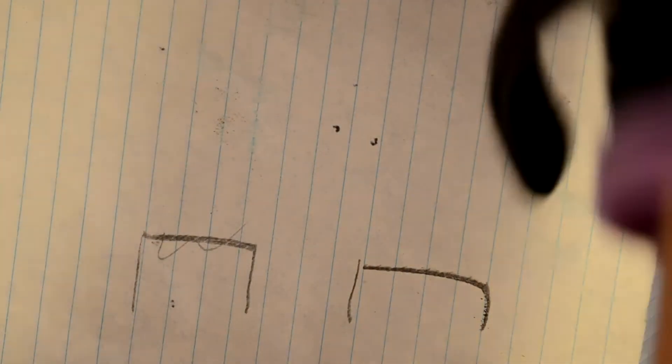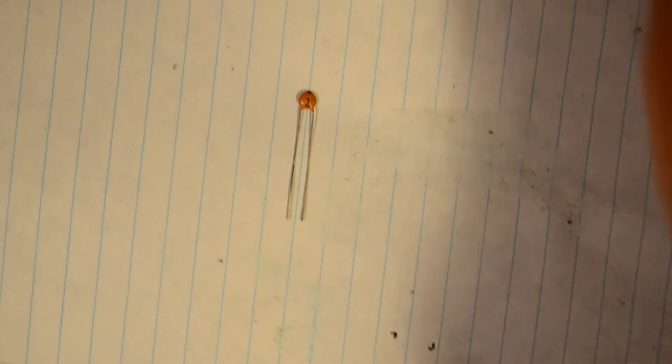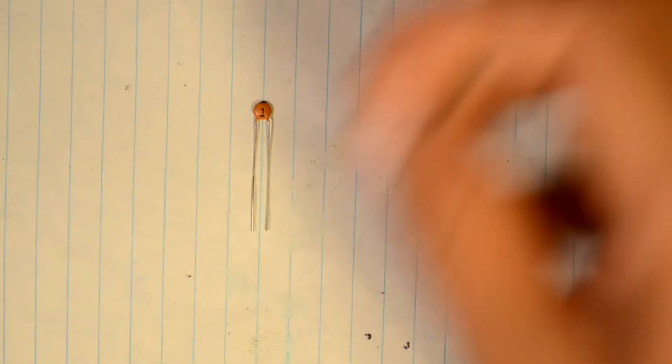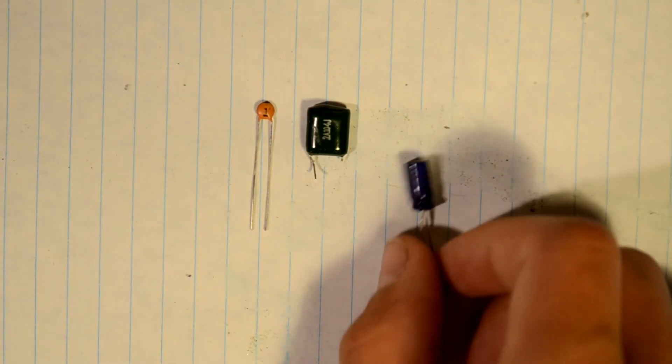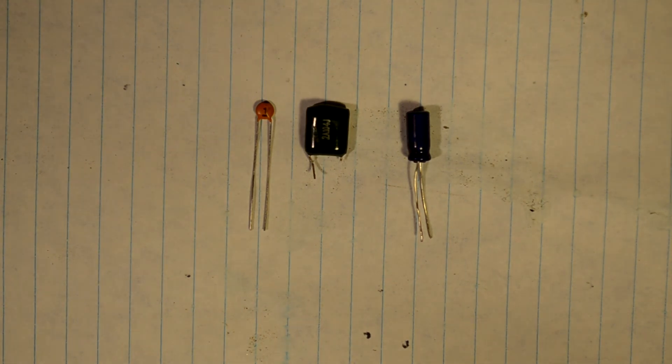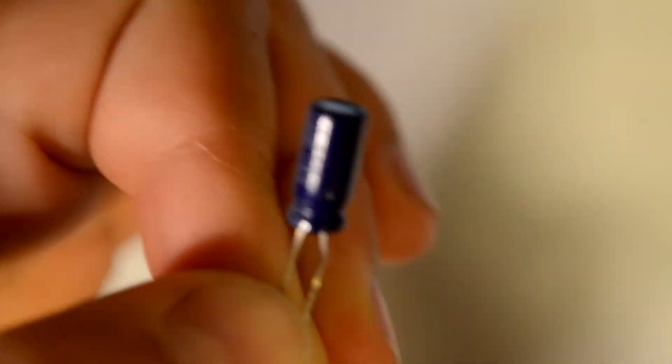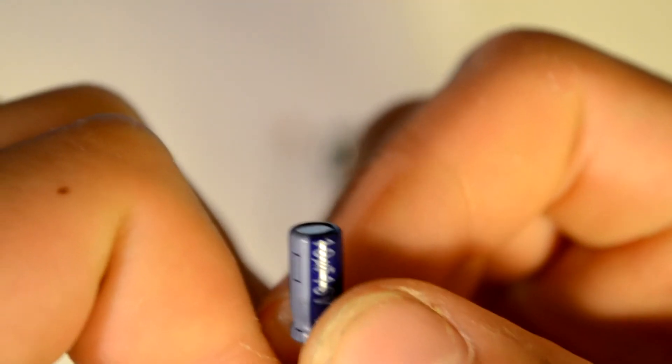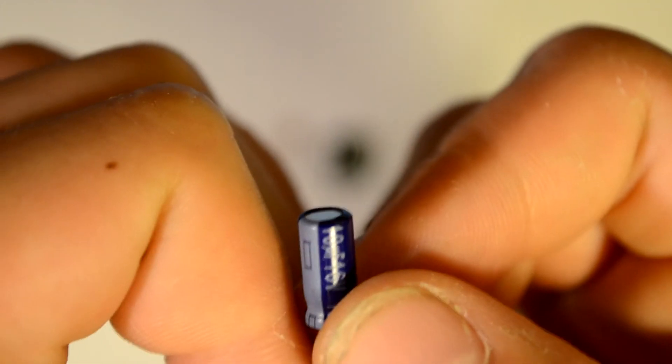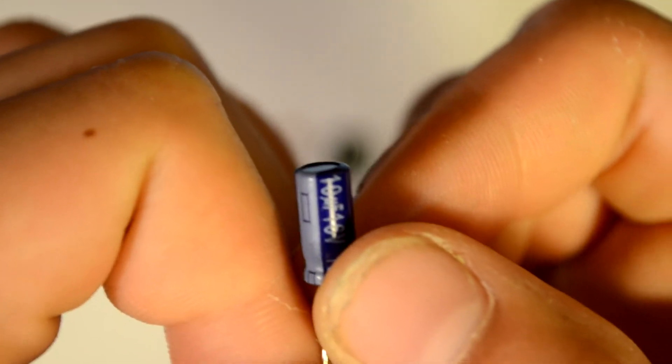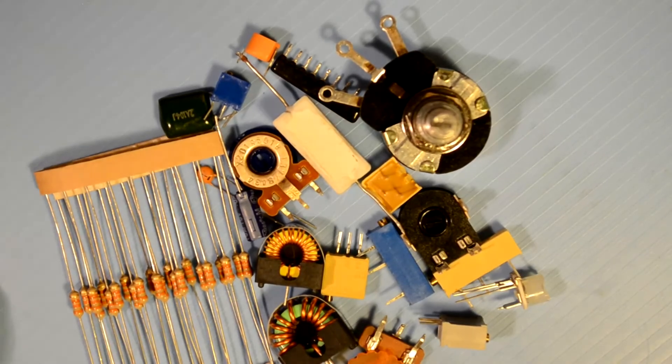I'm not going to go into determining their value in this video because it's rather complicated. If you'd like to find out how, I recommend that you go onto Google and search capacitor code calculator. But, on some capacitors, such as electrolytic, the value is printed right on this one. As you can see, 10uF at 16V.